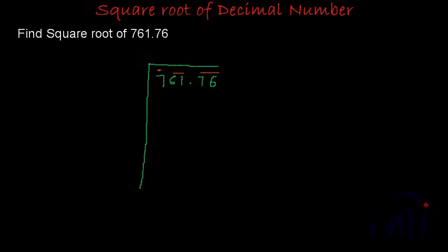So this is the only difference: we have to start making pairs from the decimal point. For the whole number portion we go towards left, and to make pairs in the decimal part we go towards the right.